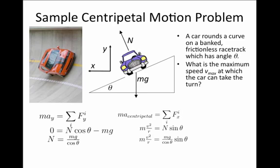So we write that mv squared over r is N sine theta, and now we insert the value for the normal force that we found from the y direction, and that is mg over cosine theta. The masses will cancel in this expression, and we find that v squared is rg times tangent of theta.